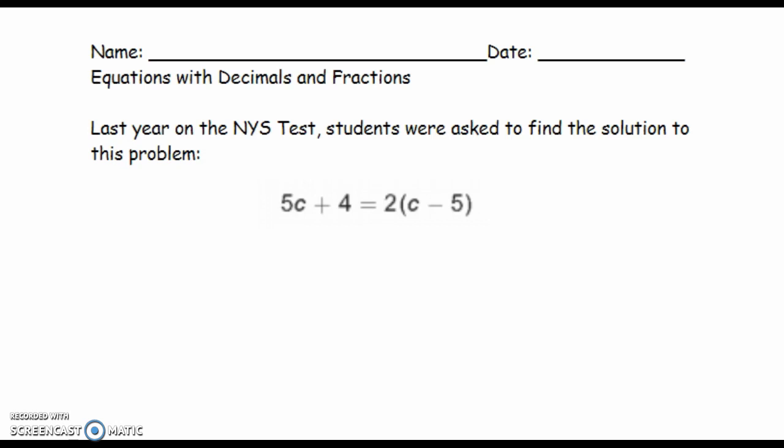Last year, on the New York State test, students were asked to find the solution for this problem. So let's work this problem through together. On the left side, if you notice, I don't have anything I can simplify anyway, but on the right side I can certainly distribute. Remember that's one of the first questions you have to ask yourself, is there anything to distribute? And there is. So I'm going to multiply 2 times c, I get 2c. Now I'm going to multiply 2 times negative 5, and that is negative 10.